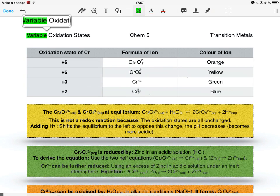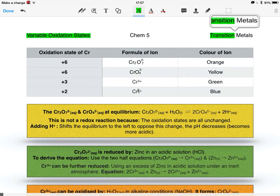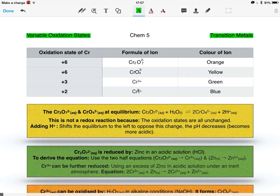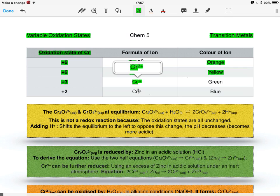Okay, so now I'm on to the variable oxidation states of the transition metals, and I'm going to start off with the oxidation states of chromium. Chromium has two plus six oxidation states. One of these is in dichromate, and the other is in chromate. The colour of dichromate is orange, and the colour of chromate is yellow. It then has a plus three charge, which is in the chromium three plus ion, and the colour of this is green, whereas in the plus two charge, in chromium two plus, the colour is blue.